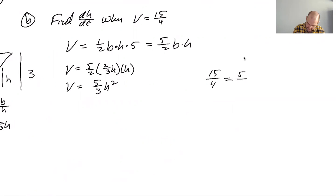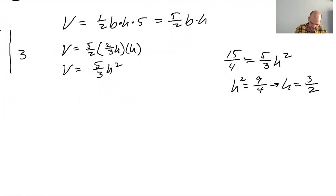So h squared is, well, 45 over 20 and then divide by five, get nine over four. Okay, sometimes my brain gets a little ahead of my, the rest of my brain. All right, I know that h will be that, so then dV/dt is 10 thirds h dh/dt.